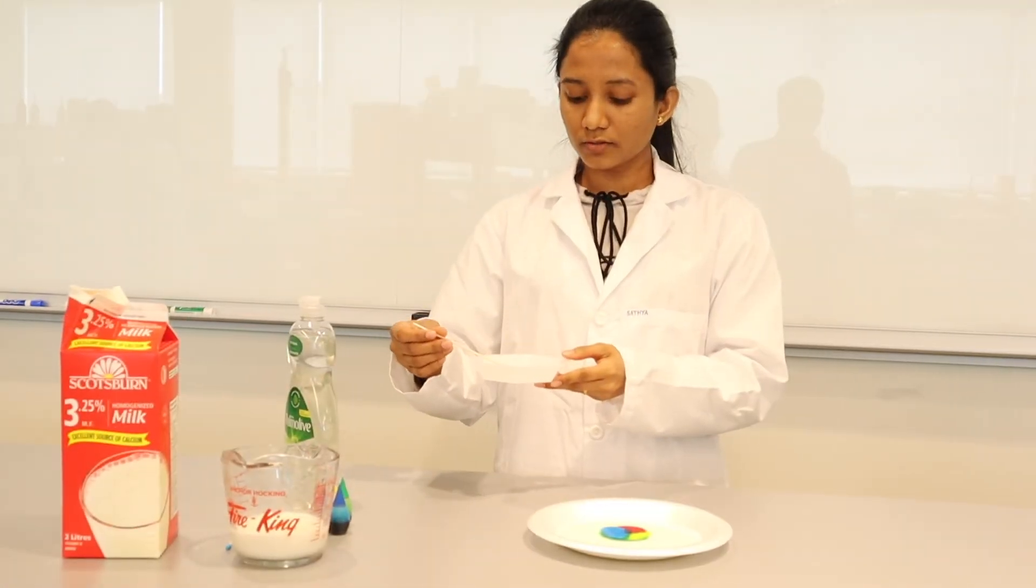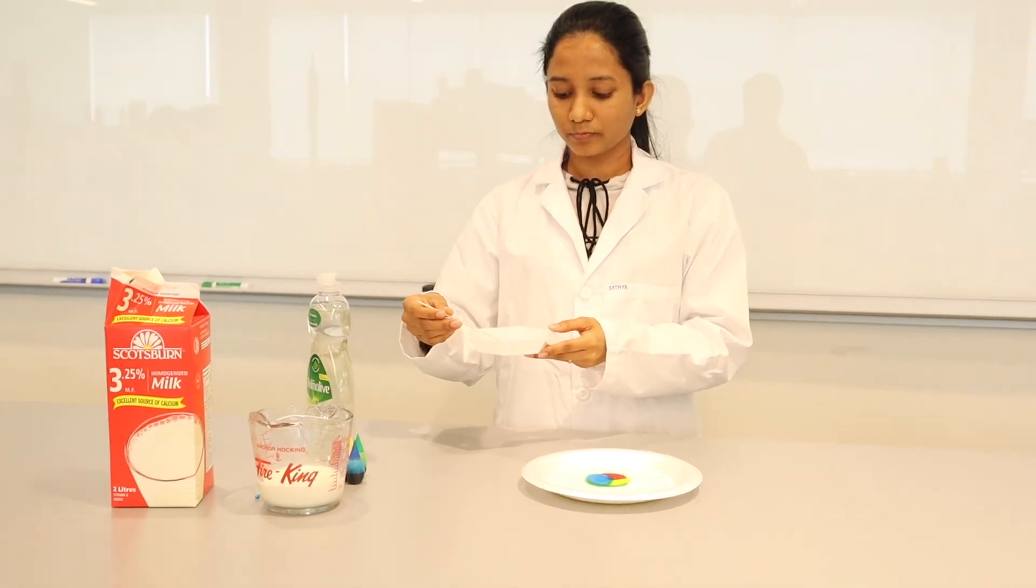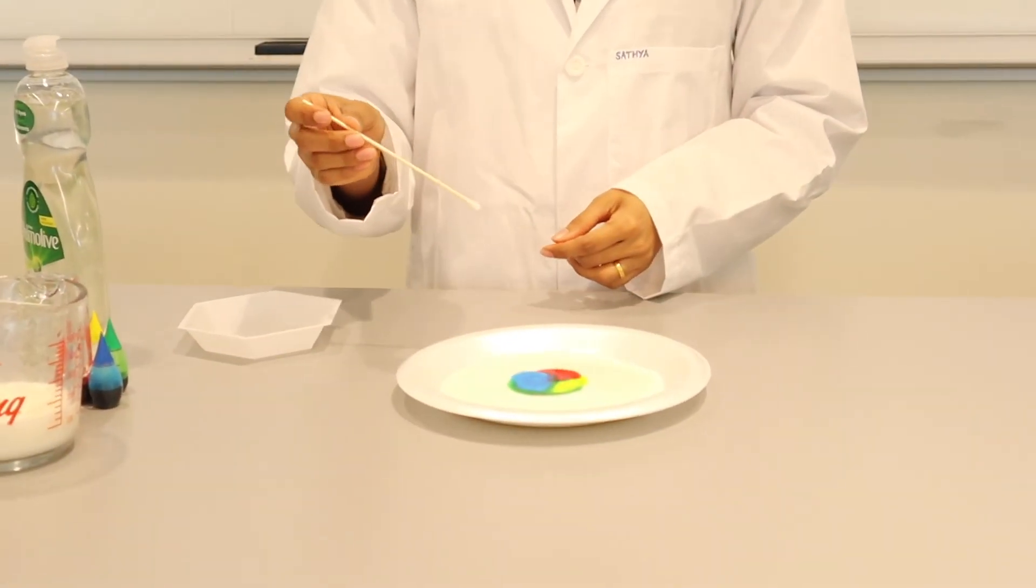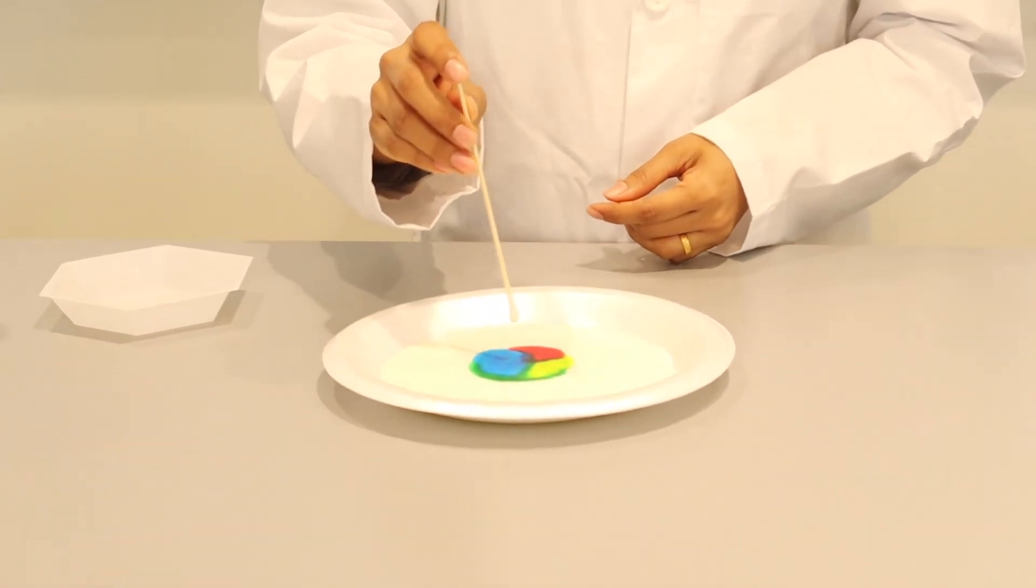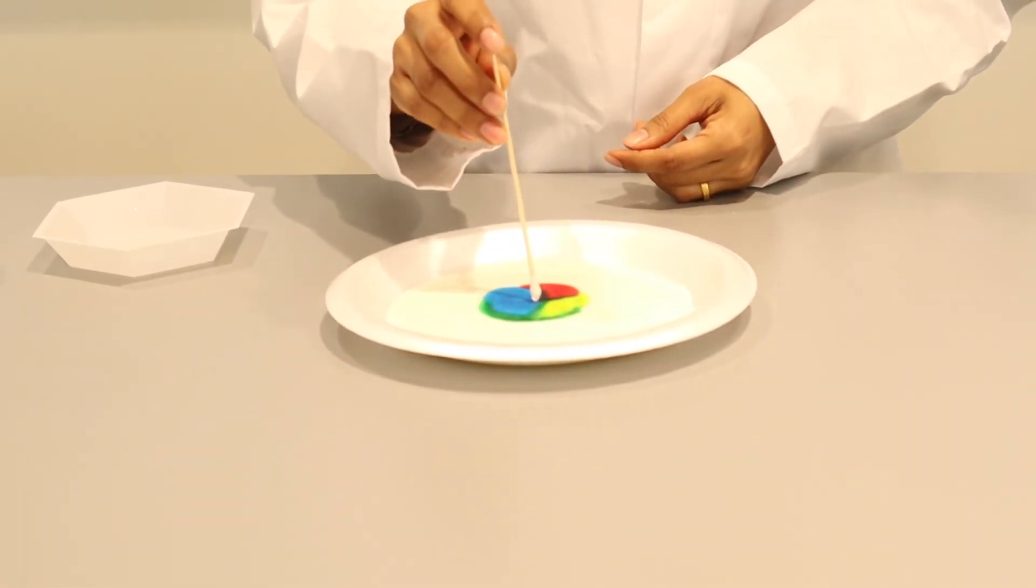Soak your cotton swab with the dishwasher soap. Then touch the surface of the food coloring with the dishwasher-coated cotton swab.